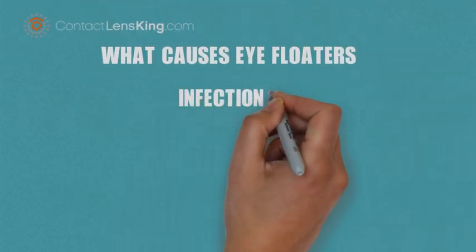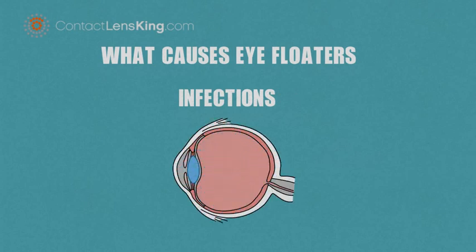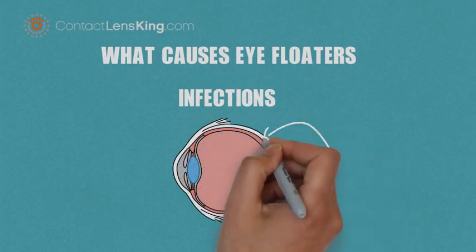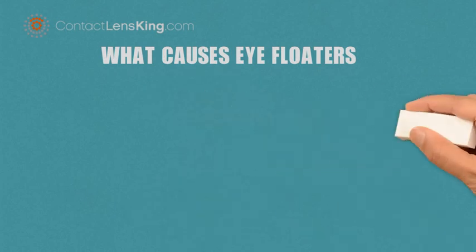Infections. Eye infections or inflammatory disease can be another cause of eye floaters. They can both impact the internal layers of the eye, resulting in premature cell sloughing, which manifests itself as floaters.